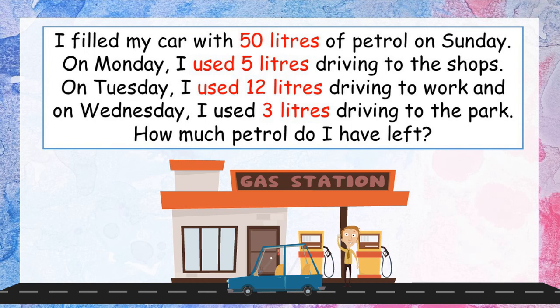I filled up my imaginary car with 50 litres of petrol on a Sunday. On Monday I used 5 litres to drive to the shops. On Tuesday I used 12 litres to drive to work, and on Wednesday I used 3 litres to drive to the park. How much petrol do I have left in my tank? This is a big multi-step sum — see if you can find all the important pieces of information. Pause the video and give it a try.